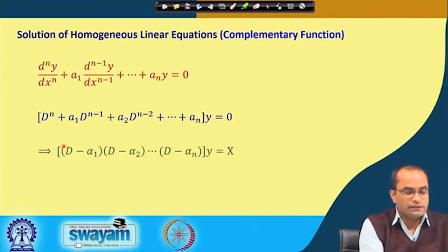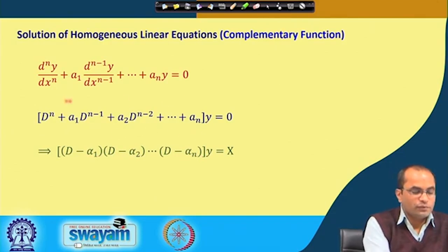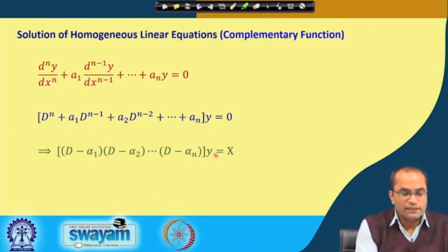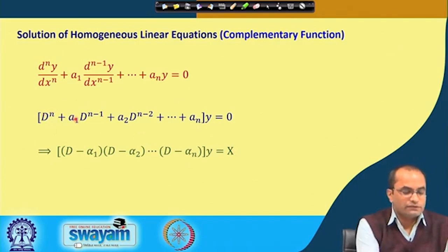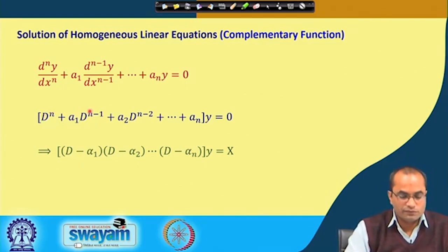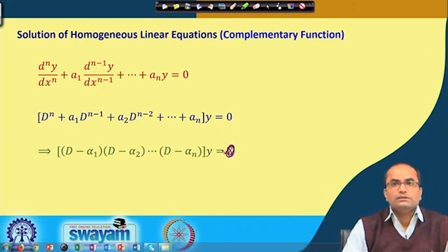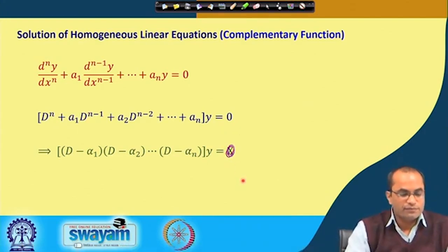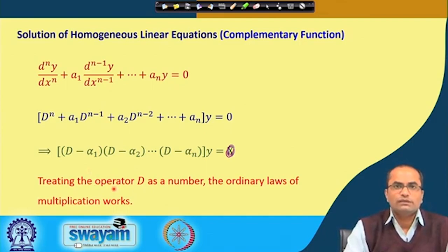We can factorize this and write it in the form (D - α₁)(D - α₂)···(D - αₙ)y = 0. This is the factorization of the operator part. We proved in the last lecture that this is exactly the same as the nth order derivative plus a₁ times the (n-1)th order derivative and so on equals zero — treating operator D as a number, the ordinary laws of multiplication work.